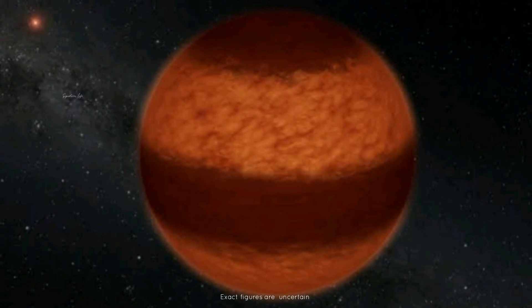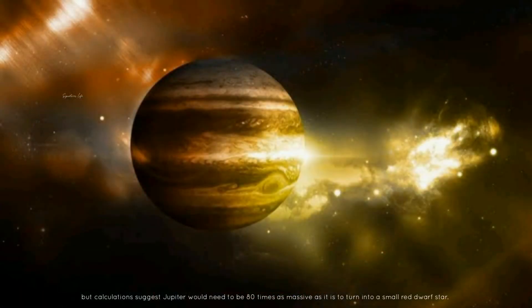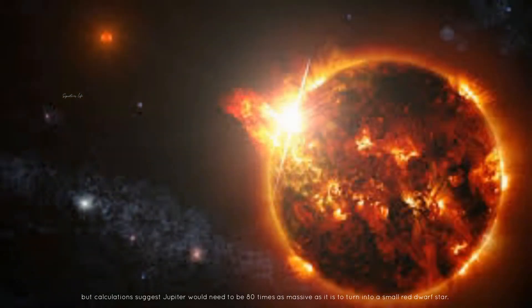Exact figures are uncertain, but calculations suggest Jupiter would need to be 80 times as massive as it is to turn into a small red dwarf star.